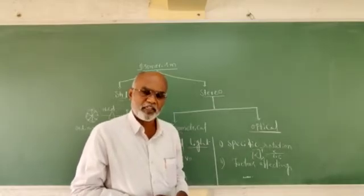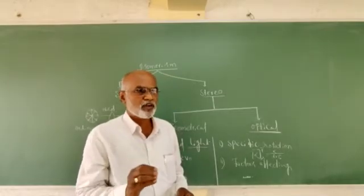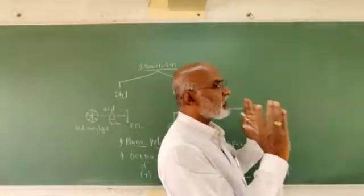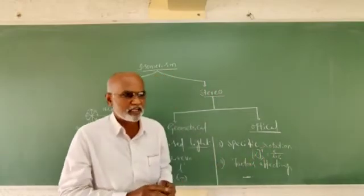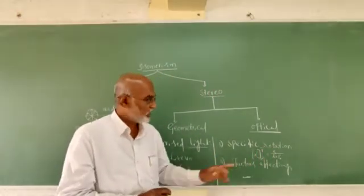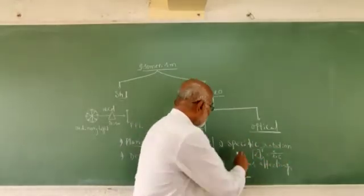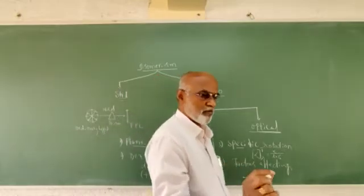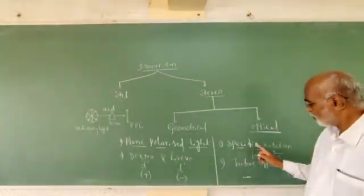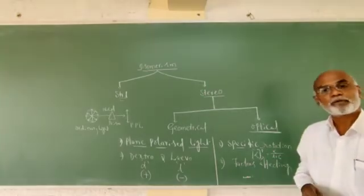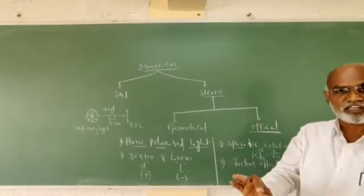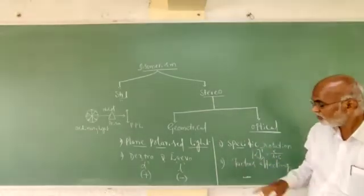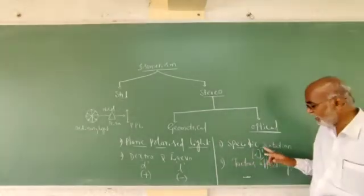At the time of determining the direction of rotation and the angle of rotation using a polarimeter, we need to follow a set of conditions. The particular angle rotated by an optically active compound is commonly referred to as specific rotation. Specific rotation is denoted by the symbol alpha and is defined as the angle of rotation caused by an optically active compound with a solution concentration of 1 gram per cm³, a solution length of 1 decimetre, for a given wavelength lambda at constant temperature.